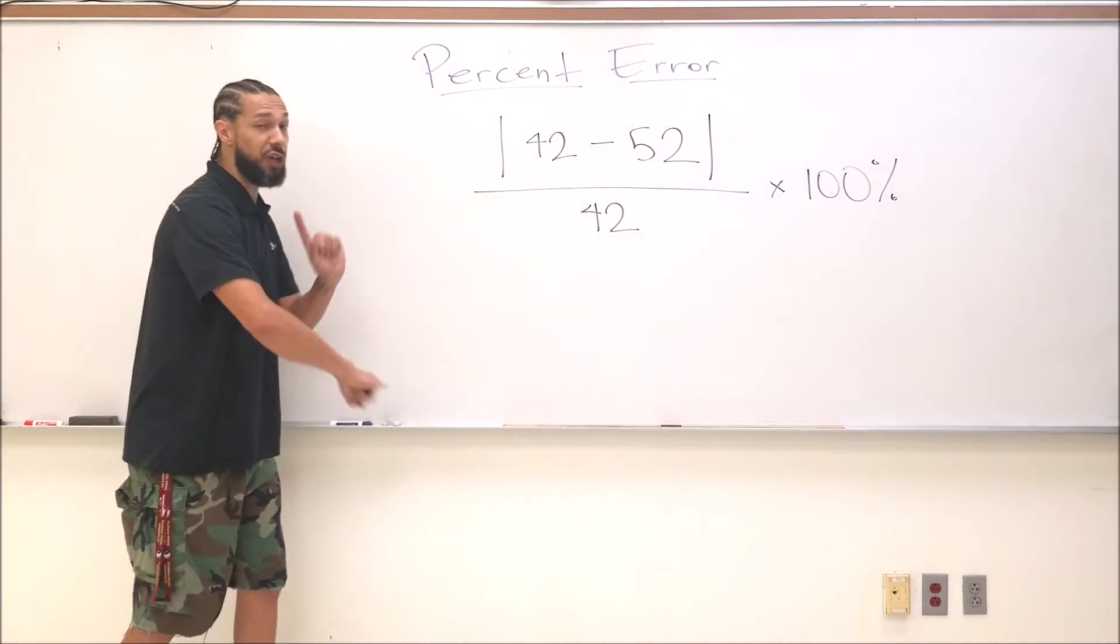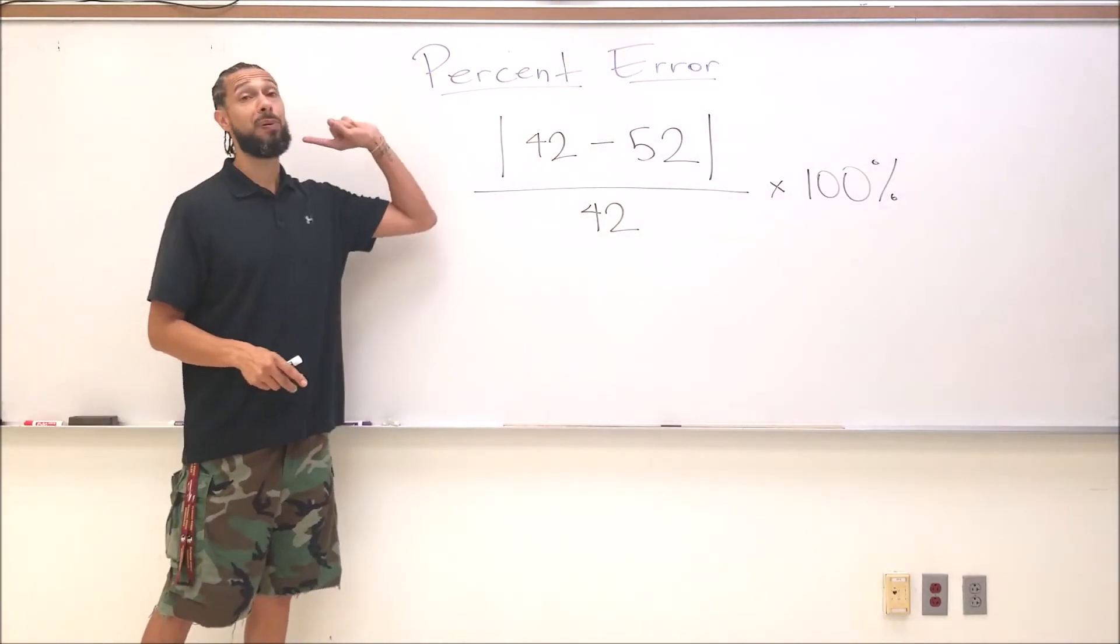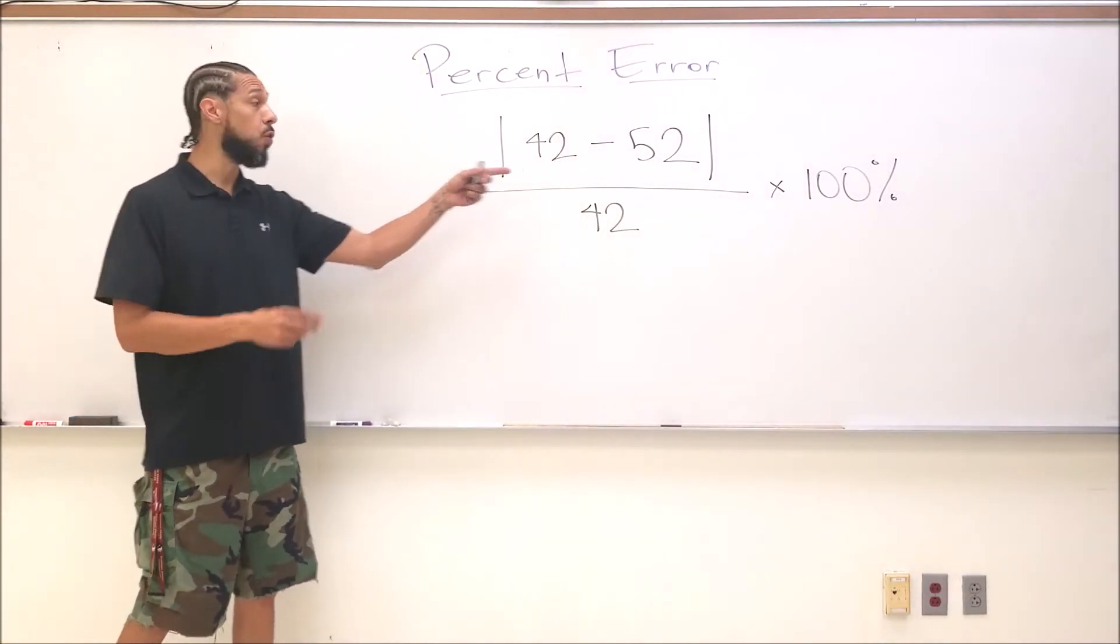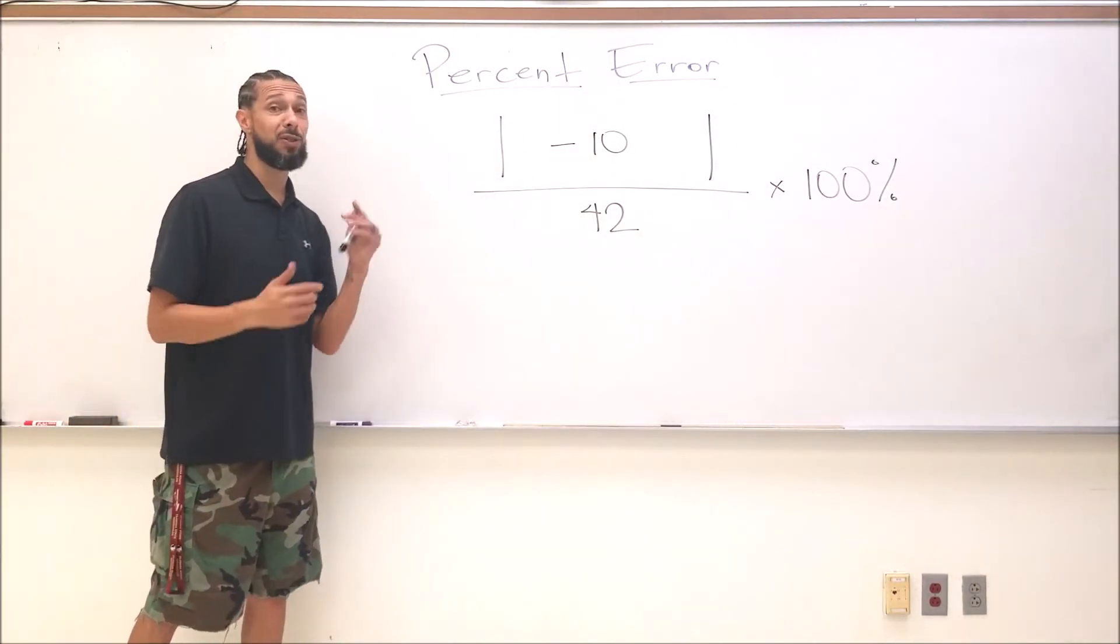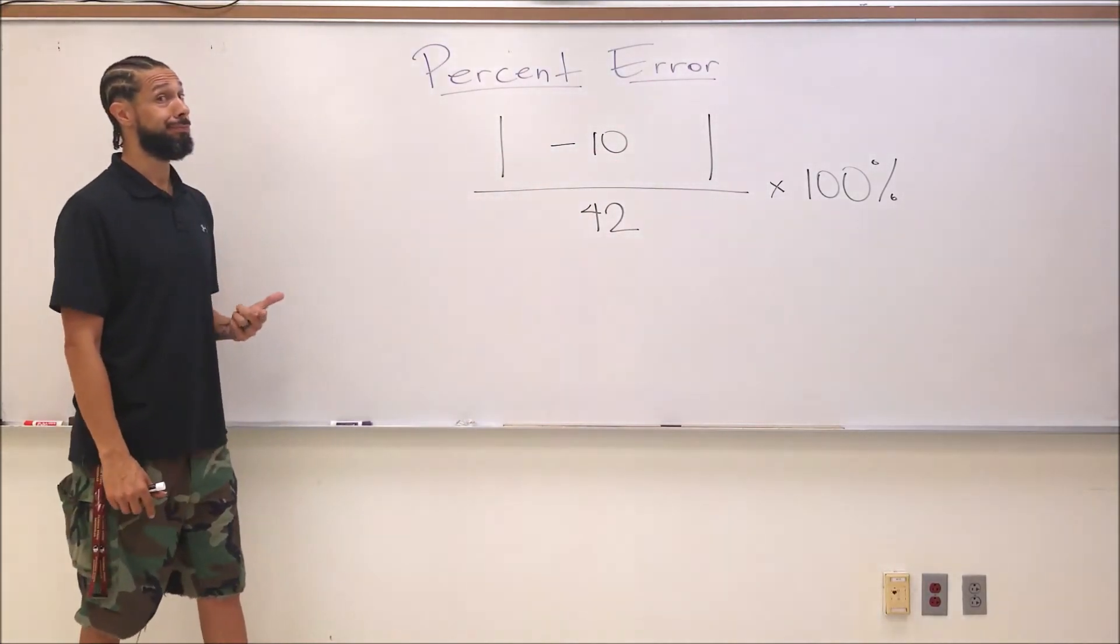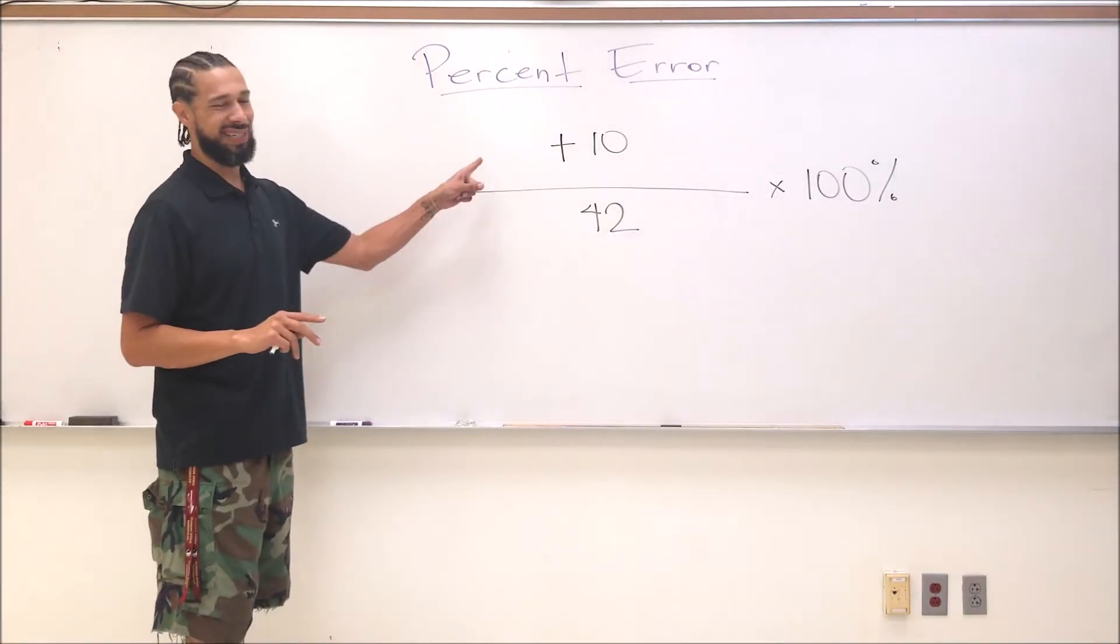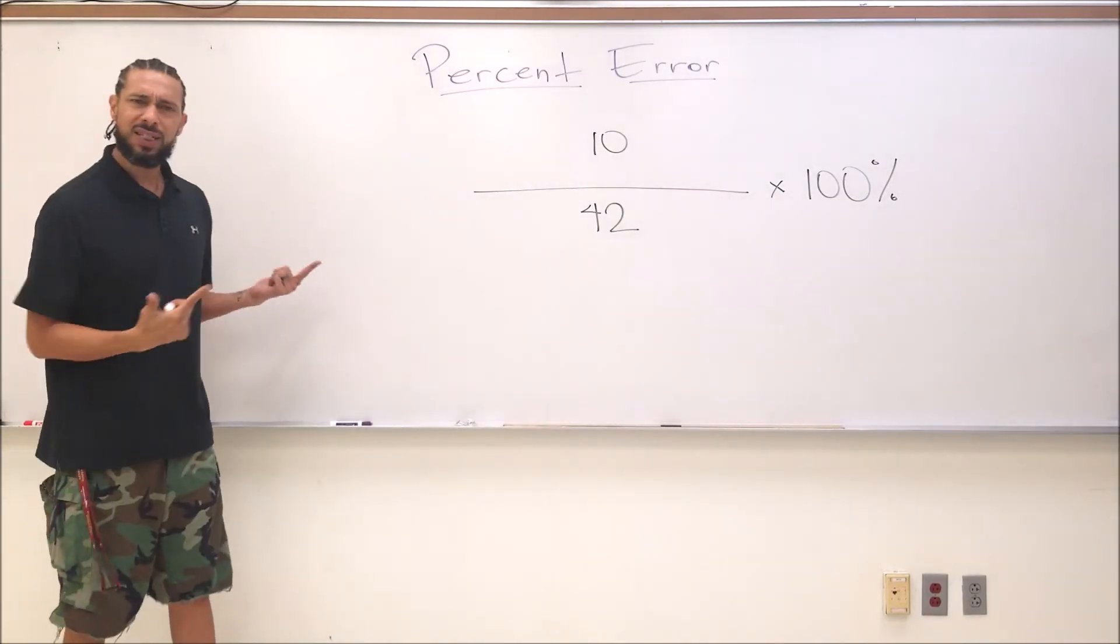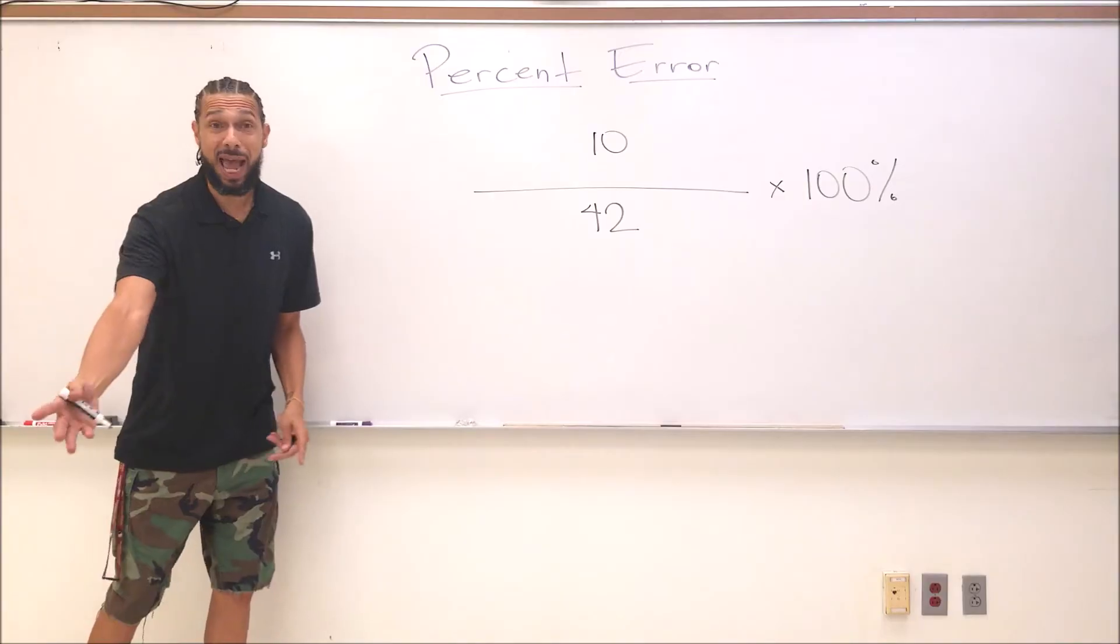Do you think that's going to matter when it comes to my percent error? Let's find out. 42 minus 52 is negative 10. However, straight bars, absolute value, changes that result from negative 10 to a positive 10. Now we're a little bit far ahead to be keeping positives in front of some numbers, so I'm going to go ahead and get rid of that. Isn't this the same thing that we had before?